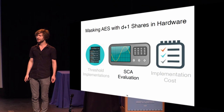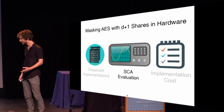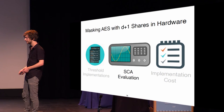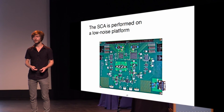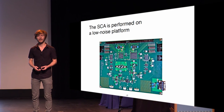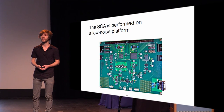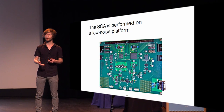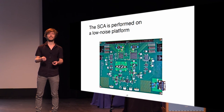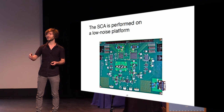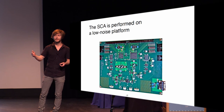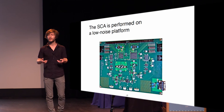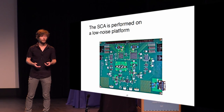Now our implementation is done, everything is coded. We load it on our FPGAs and proceed with the side-channel evaluation. For that we use an evaluation board with very low noise. The lower the noise, the faster you see leakage in your masking scheme — so if we have no leakage with a high number of traces, we can be really confident that we have achieved the security we want.